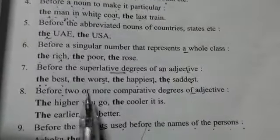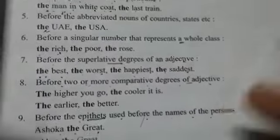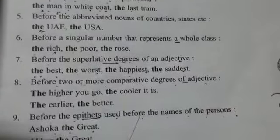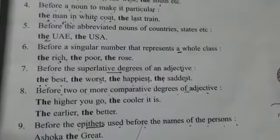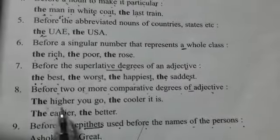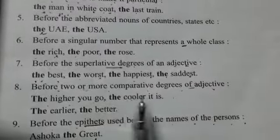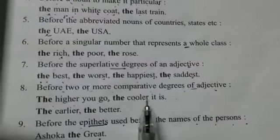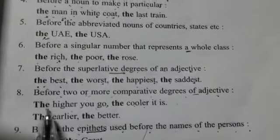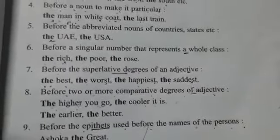Before two or more comparative degrees of adjectives — jab hum doh ya zyada comparative degrees ko use kertey hain, then also we will use 'the.' For example: 'The higher you go, the cooler it is.' Yaha hummne two comparative degrees use kiye hain. Jitna upar aap jaoge, utna hi thundak ho jayegi.